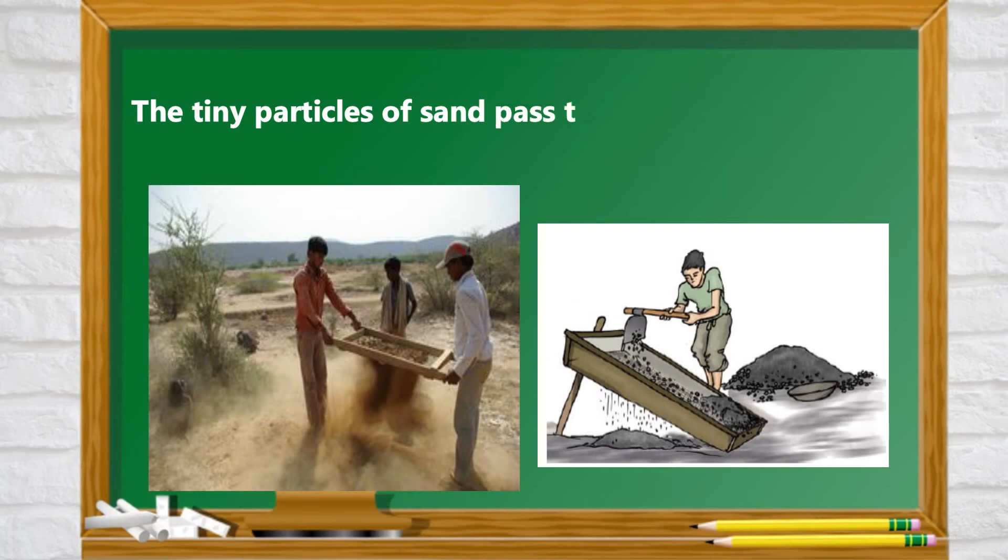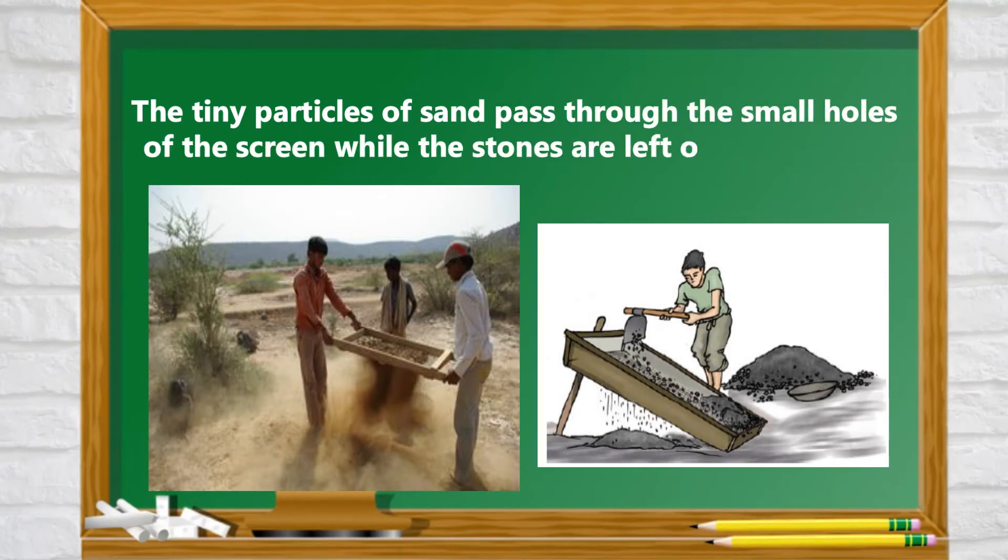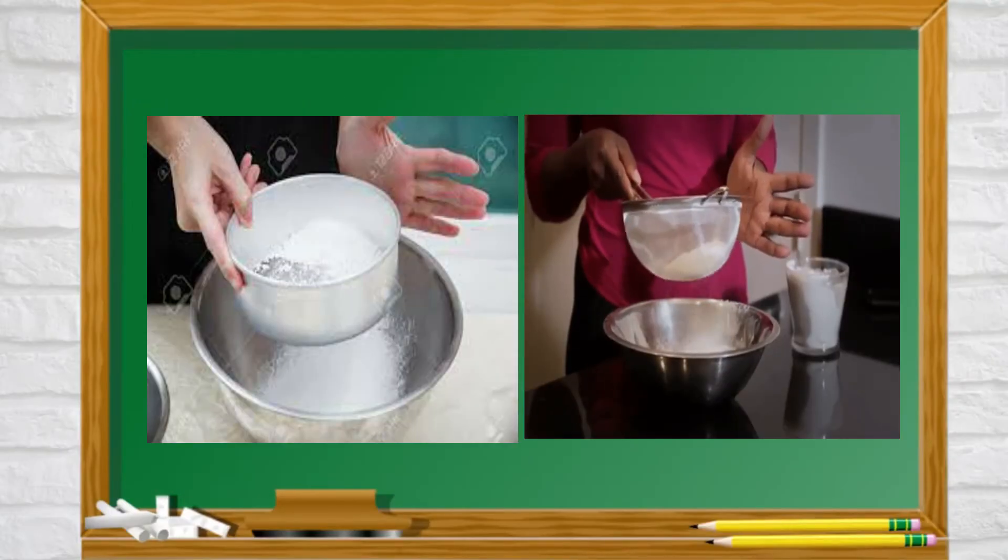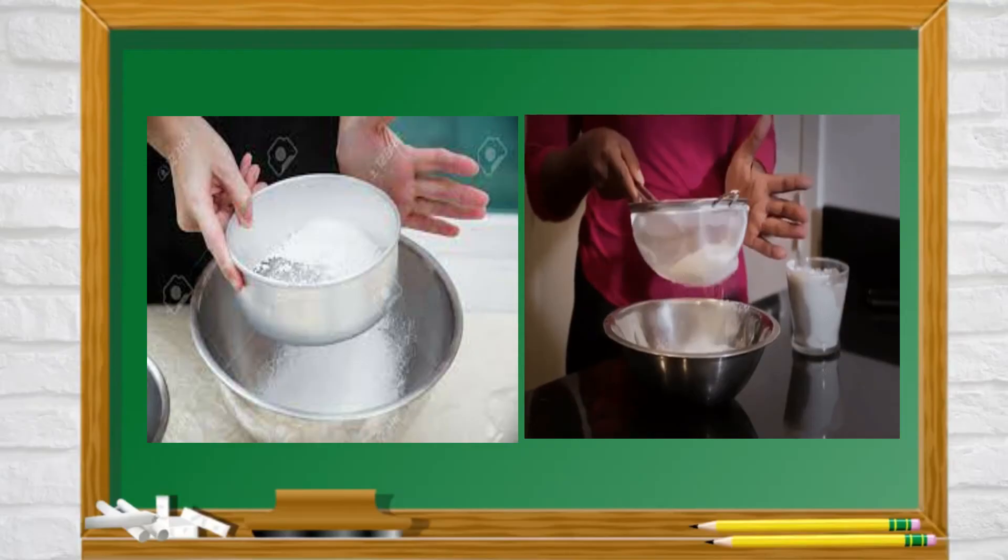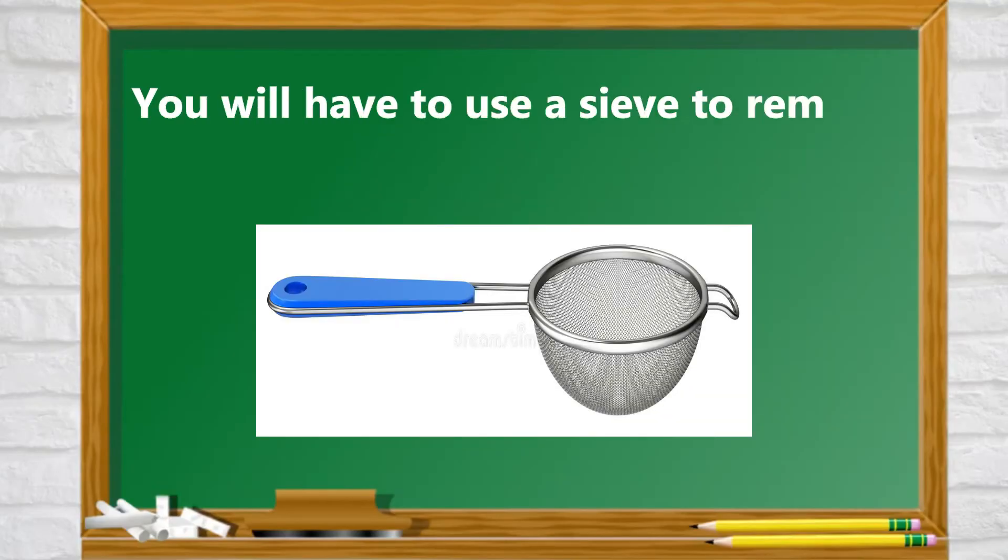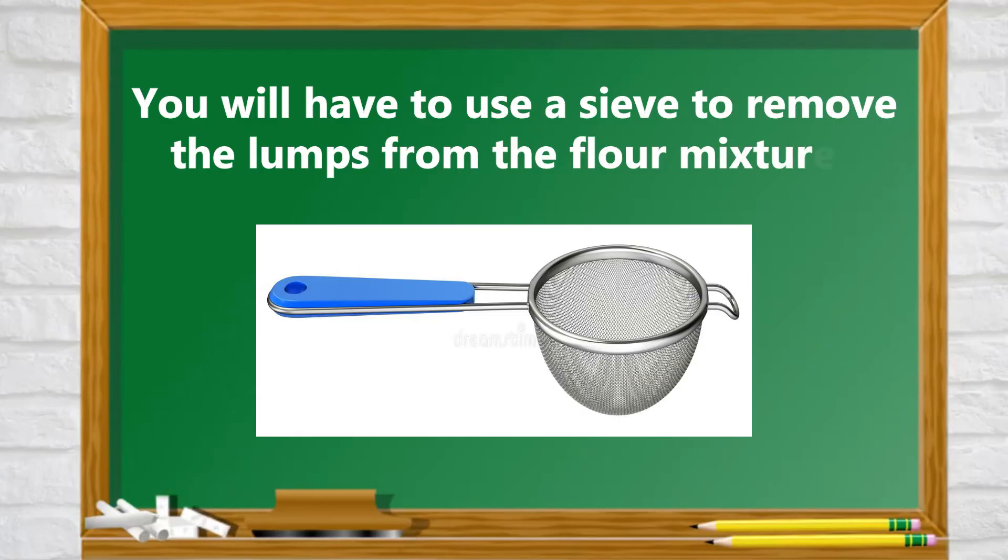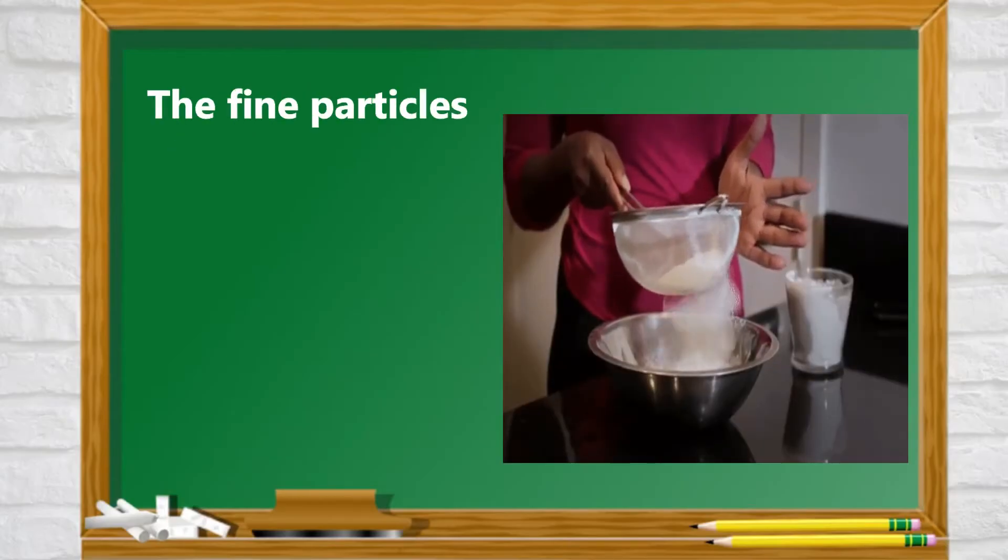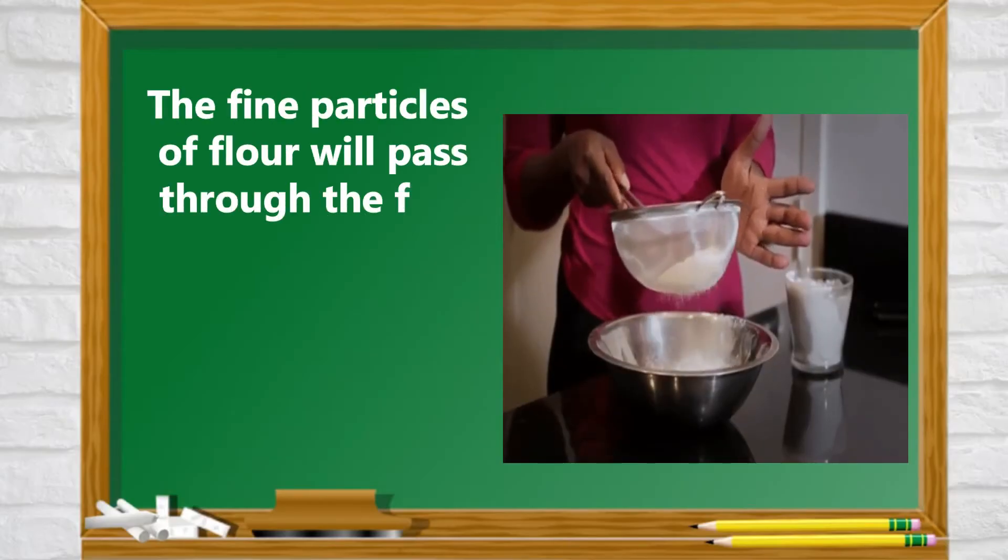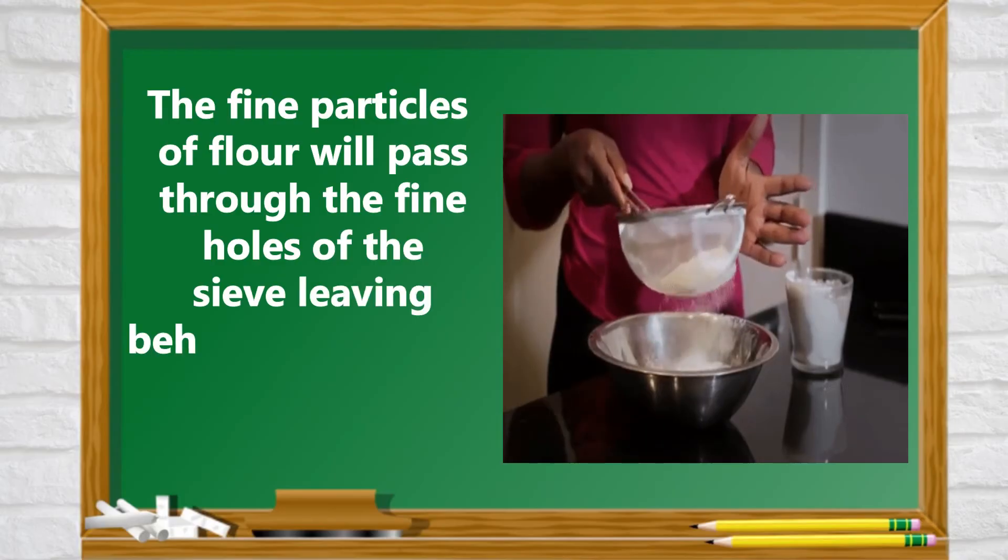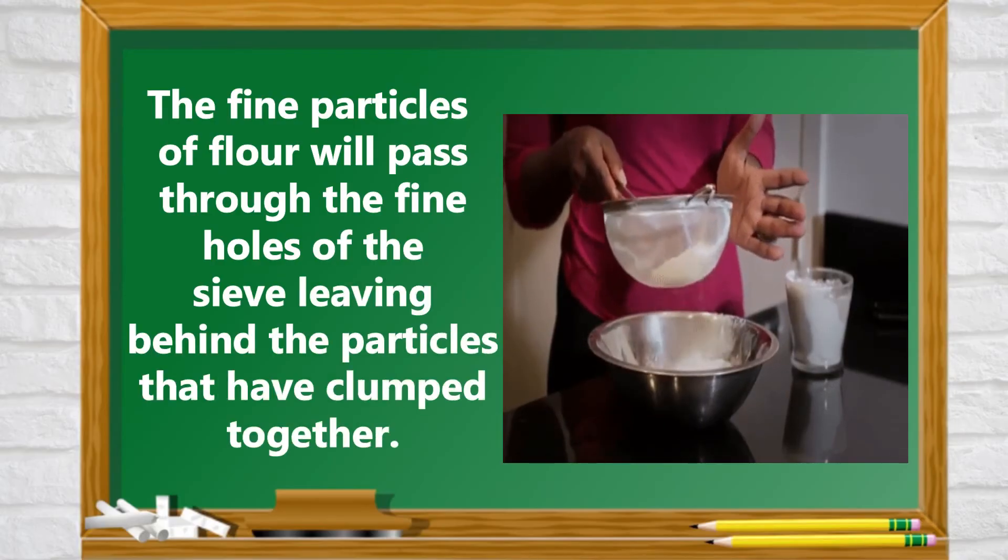The tiny particles of sand pass through the small holes of the screen while the stones are left on the screen. Similarly, if you and your classmates are to bake a fluffy cake in your livelihood education class, you need to see that the flour is very fine and free from lumps. You will have to use a sieve to remove the lumps from the flour mixture. The fine particles of flour will pass through the fine holes of the sieve leaving behind the particles that have clumped together.